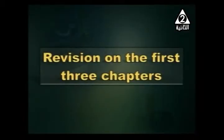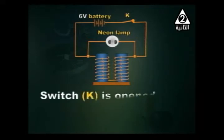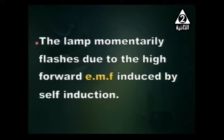Revision on the first three chapters. First type of question: 'What happens when?' In front of you we have a circuit, and we want you to explain what happens when the switch K is opened. The lamp momentarily flashes.